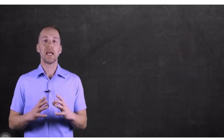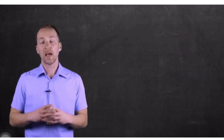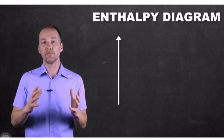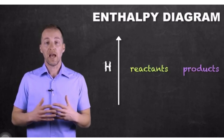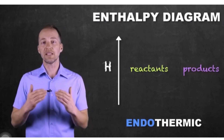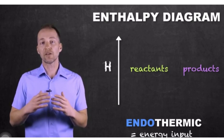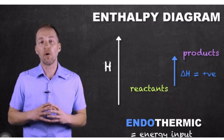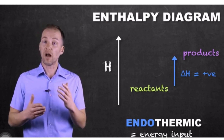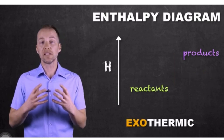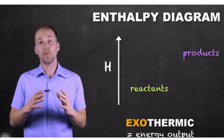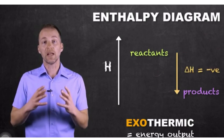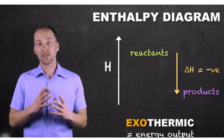Another way to represent thermochemical processes is using an enthalpy diagram. In this diagram, there is no zero value — it is a relative measure of the enthalpy of reactants and products. For an endothermic process, since energy is input into the system, the reactants have lower enthalpy than the products, showing an increase in overall enthalpy. For an exothermic reaction, since energy is lost to the surroundings, the reactants have higher overall enthalpy than the products, showing a loss of enthalpy as the reaction proceeds.